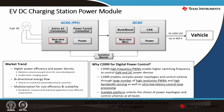Now, why C2000 for digital power control? For higher power efficiency and power density, we have high-frequency PWMs which enable high switching frequency to control gallium nitride as well as silicon power devices. C2000 also enables complex power topologies and control schemes through a large number of high-resolution PWMs and high-bandwidth sensing, enabling ultra-low latency control loop processing — a very fast ADC combined with fast processing. The platform is also scalable, where you can port code from one device to another with minimal or no changes. This unlocks the choice for power topologies and control schemes at all levels.